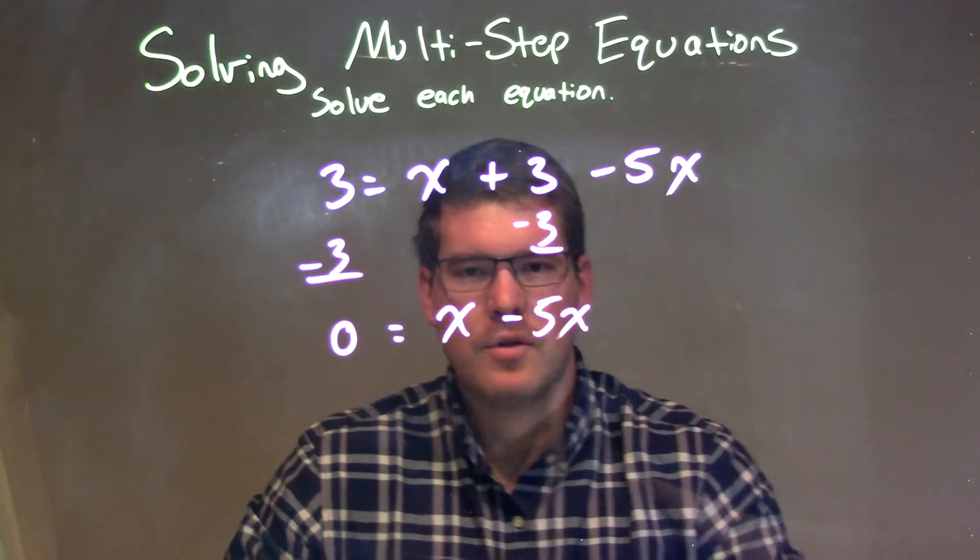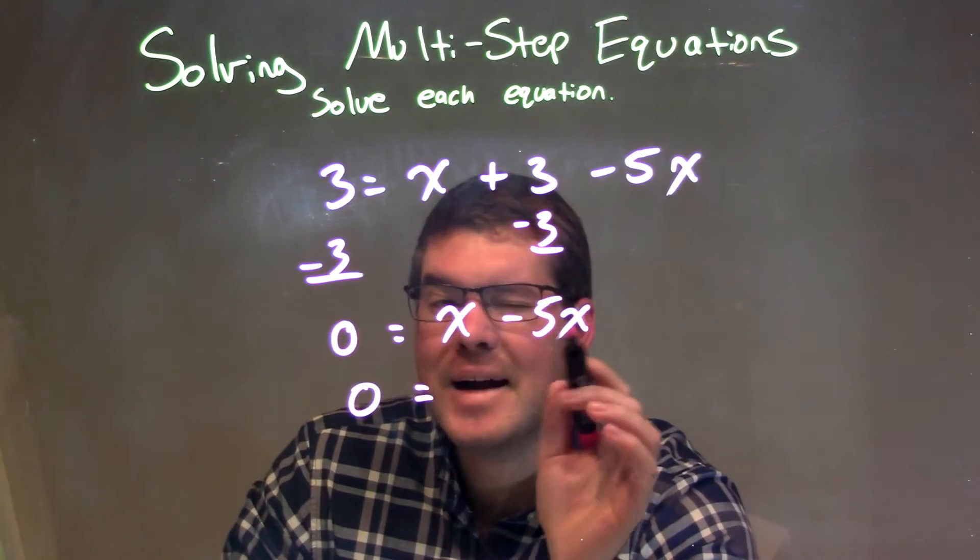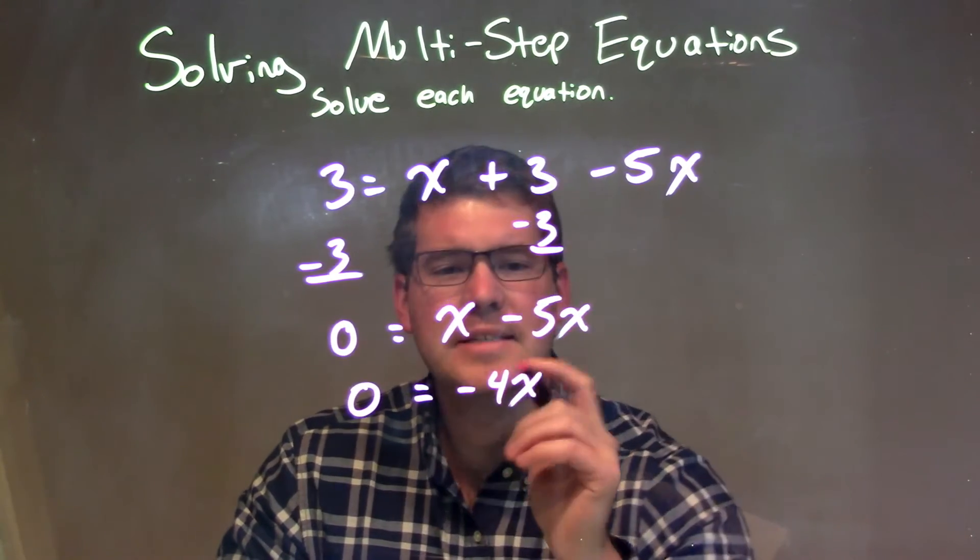So now what I'm going to do is combine my like terms here on the right. 0 still comes down, and x minus 5x is a minus 4x. Pretty simple so far.